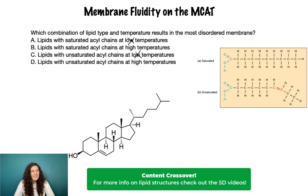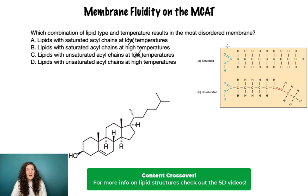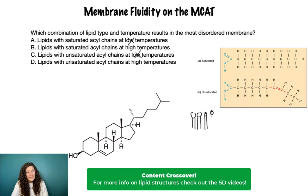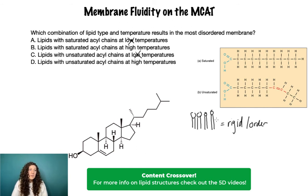If you look at saturated fat versus unsaturated, they're both long chains of hydrocarbons, but the saturated is nice and regular — C-H-H-C-H-H — nice straight lines. So you can imagine that if these were all packed together in a lipid membrane, they would pack really neatly because of those straight chains. When things are packed tightly and neatly, they're less likely to move or be disordered. So saturated fats produce a fairly rigid membrane — high rigidity, high order.